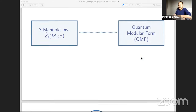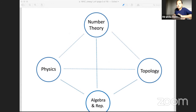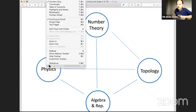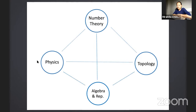To tell this story well, there are a few subjects involved. We will discuss the number theory of quantum modular forms, the topology of three-manifolds, and this topological invariant will have a physical origin. They will also be related to representations of interesting non-rational vertex algebras.